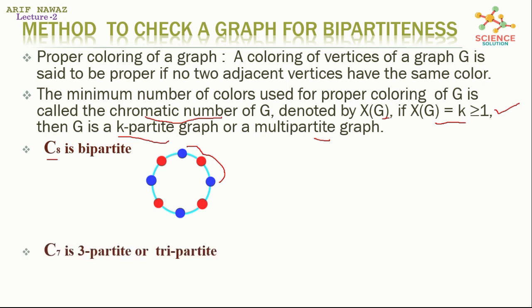C_7 is the cycle graph of 7 vertices. If we make a proper coloring of this graph, a minimum of three colors are needed, because using fewer than three would cause two adjacent vertices to share the same color. So C_7 is not bipartite, but it is tripartite (3-partite).